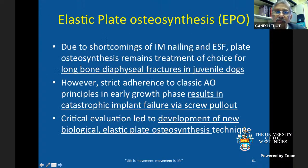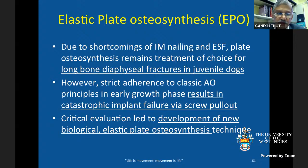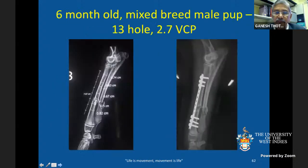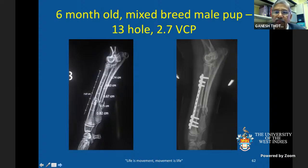Dynamization principles led to techniques like elastic plate osteosynthesis and titanium elastic nailing, in addition to staged disassembly of external skeletal fixators or interlocking nails. In elastic plate osteosynthesis, typically used for long bone diaphyseal fractures in juvenile or young growing animals, only a couple of screws are loaded at each end of the plate while remaining screw holes are left empty. This allows some elasticity in the plate, providing micro-motion at the fracture site to stimulate callus formation and faster healing.